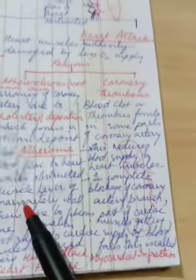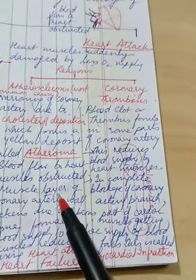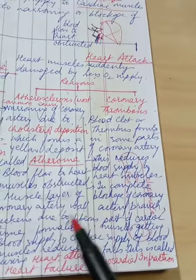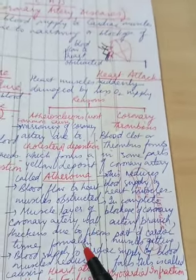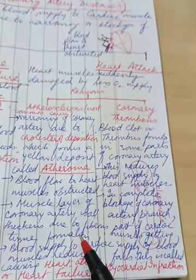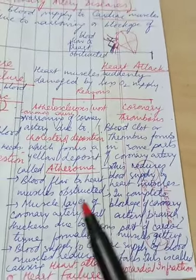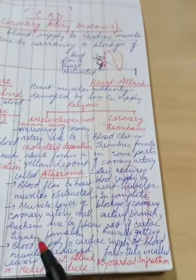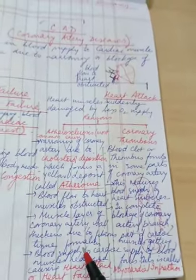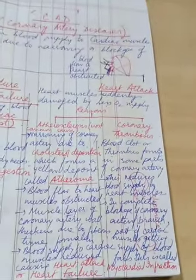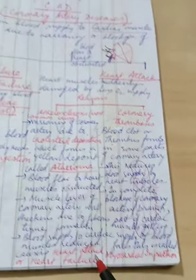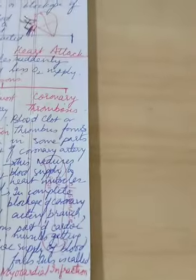This atheroma it will disrupt or it will obstruct the blood flow through the artery to the heart muscles. It is obstructed and then what happens is that the muscle layer of coronary artery wall thickens due to fibrous tissue formation. Along with that atheroma formation this thickening of the muscle layer is also seen due to fibrous tissue formation. Ultimately what happens is this causes further narrowing and the blood supply to cardiac muscle is reduced. This causes heart attack or heart failure.